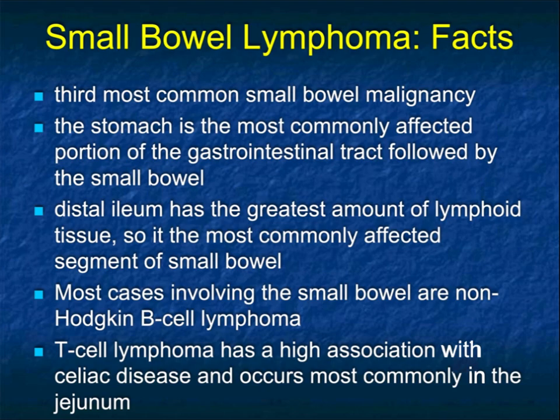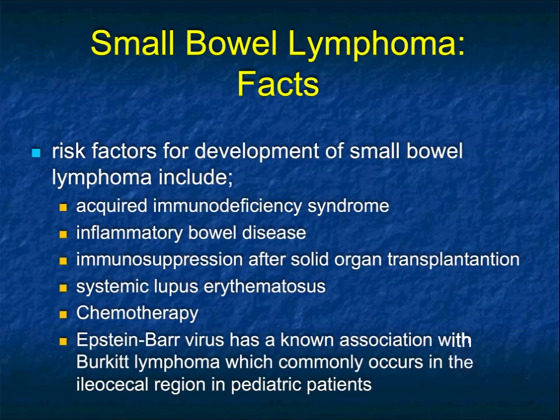Lymphoma is the third most common small bowel malignancy. The stomach is the most commonly affected portion of the GI tract, with small bowel being number two. It's typically found in the distal ileum because it has the most lymphoid tissue. Remember, adenocarcinoma is more proximal, lymphoma is more distal. Most cases involving the bowel are non-Hodgkin's B-cell lymphoma. T-cell lymphoma has a high association with celiac disease and occurs more commonly in the jejunum.